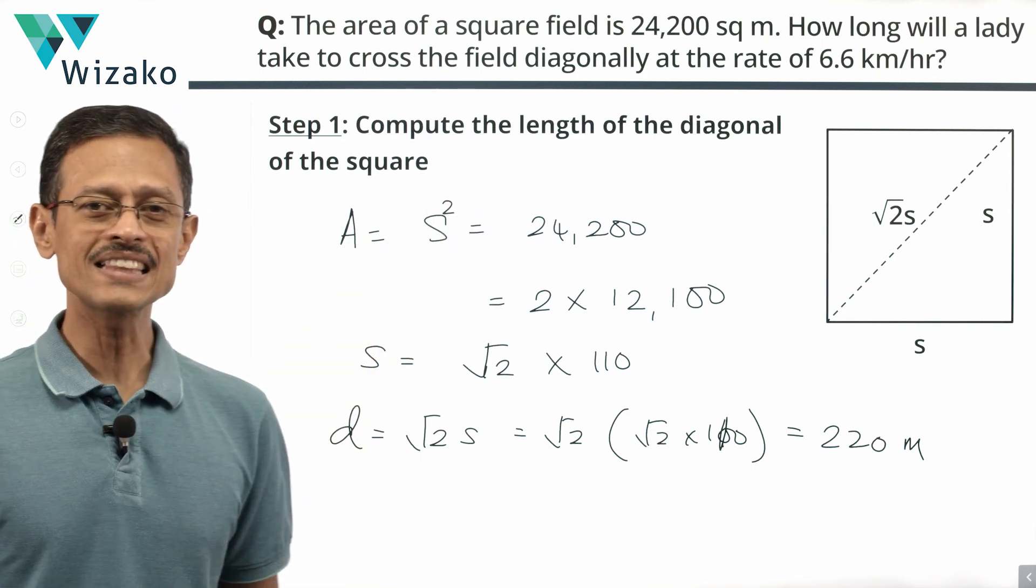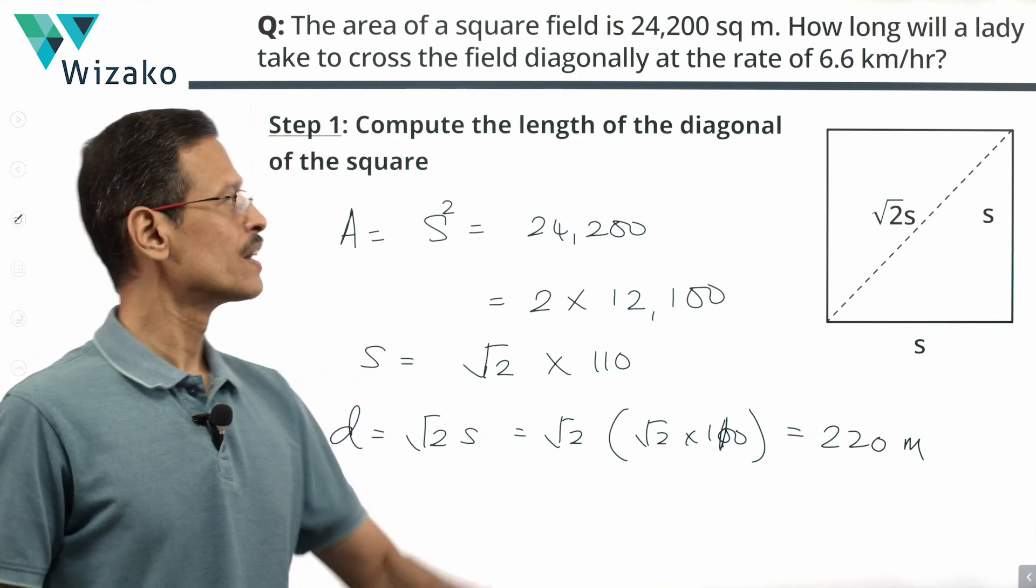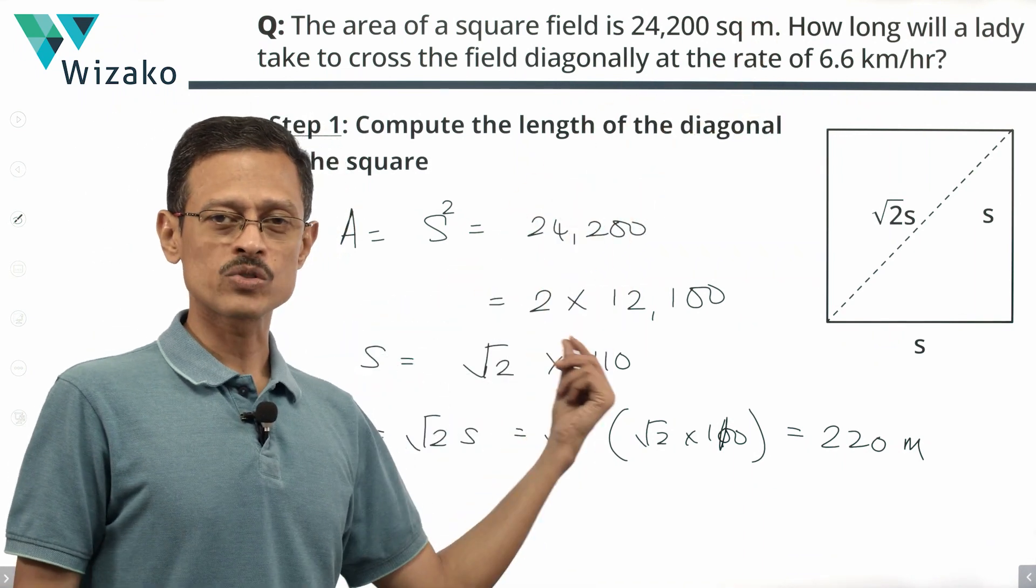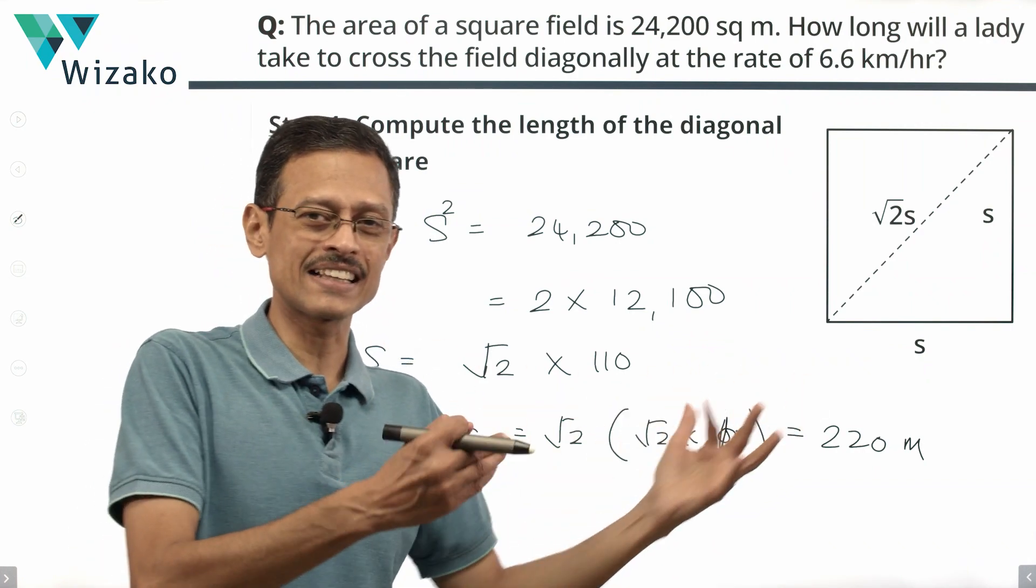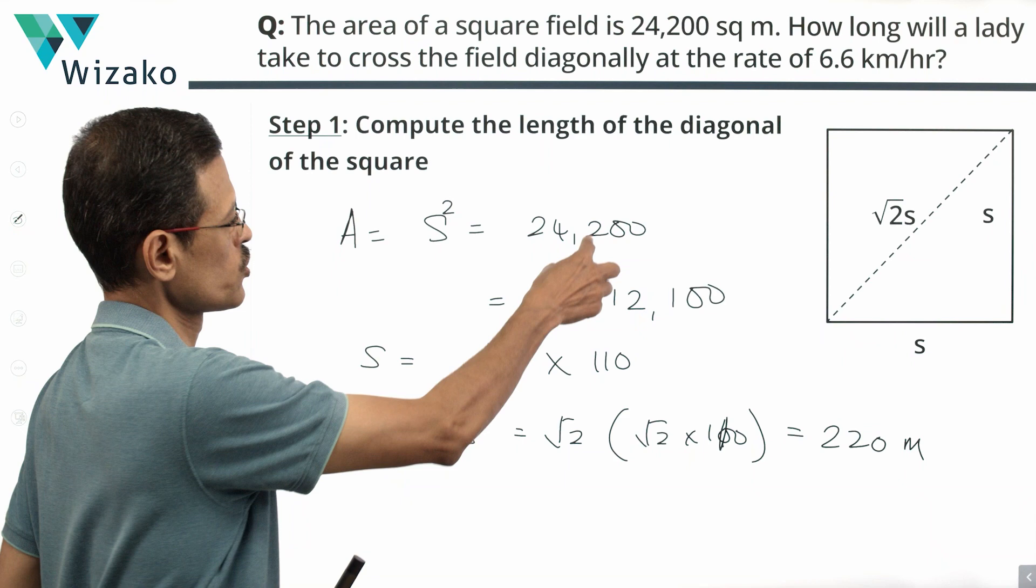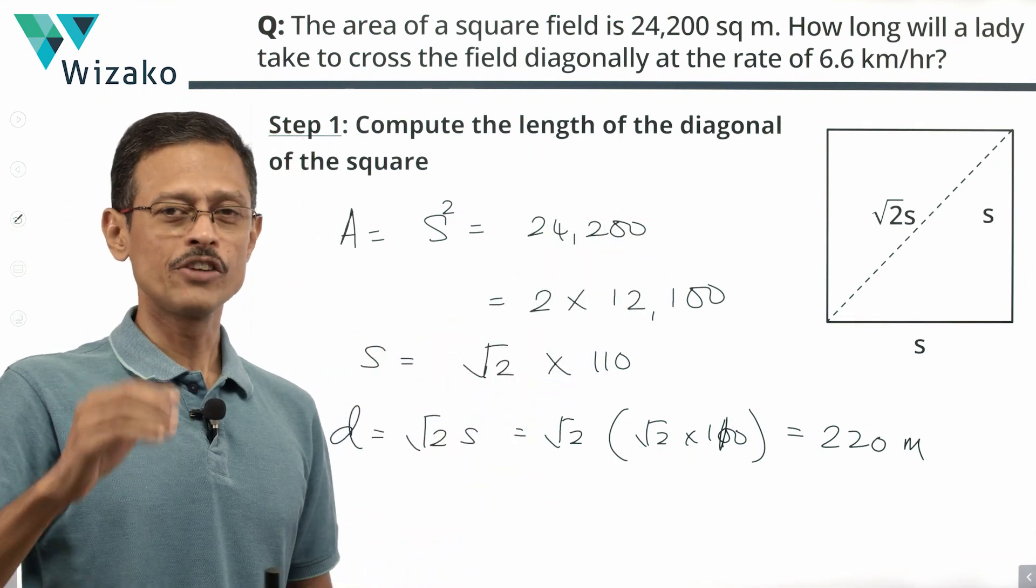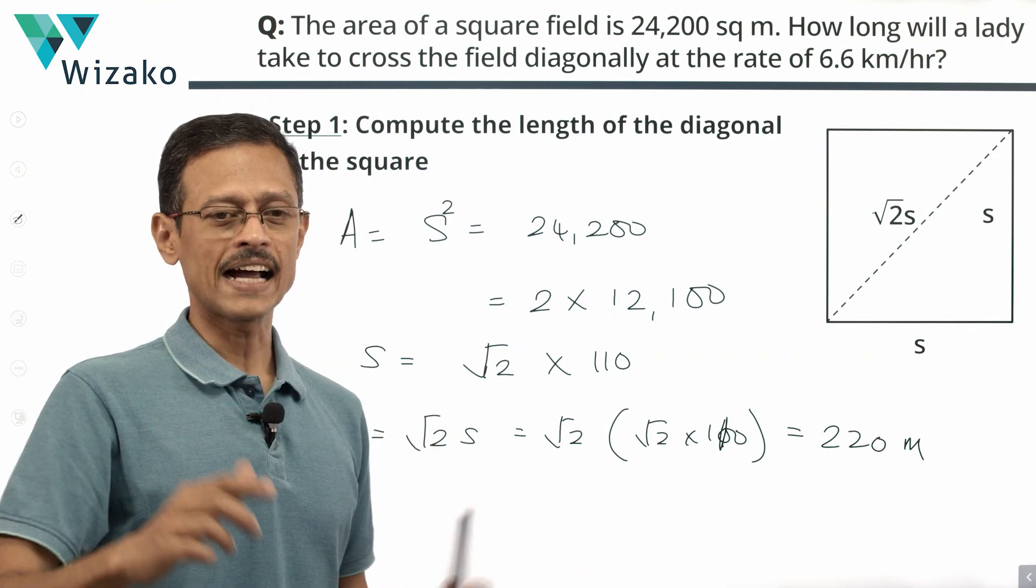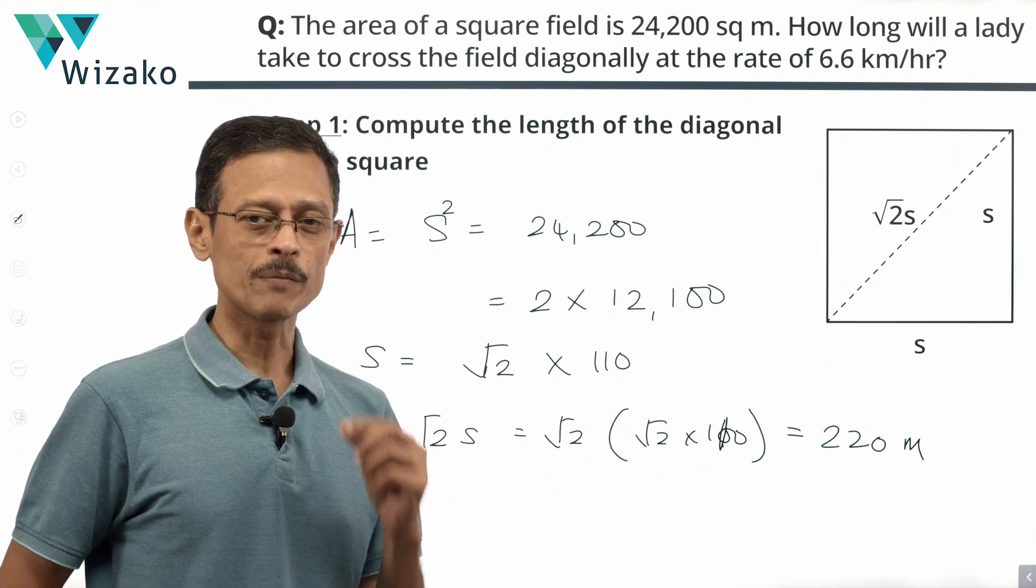So step one, we have found out the length that this lady is walking. She is walking a distance of 220 meters. From the area of the square, we computed the side. From there we computed the diagonal. The only crux of this entire discussion till now is, did you spot this 24,200 as 2 times 12,100? If you did that, the calculation is really as smooth as what you have done. Now that we've got the distance, let's compute the time.